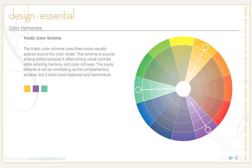The triadic color scheme uses three colors equally spaced around the color wheel. It's very popular among artists because it offers strong visual contrast while retaining harmony and color richness. It's not as contrasting as the complementary scheme, but it always looks balanced and harmonious. Pros: high contrast while retaining harmony. Cons: not as contrasting as complementary. When using it, choose one color to dominate, and if the colors look gaudy, subdue them by desaturating slightly.